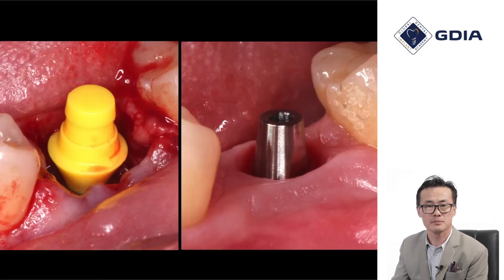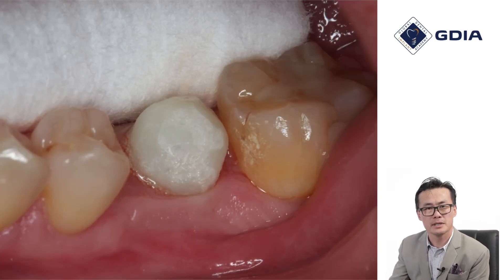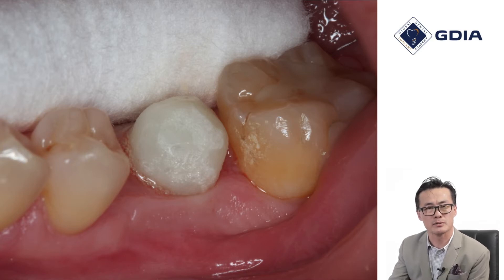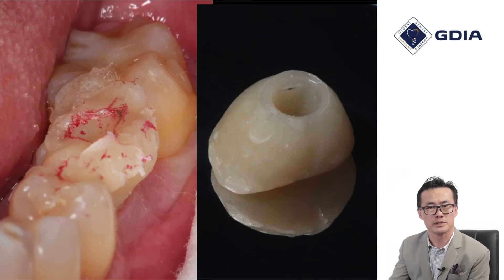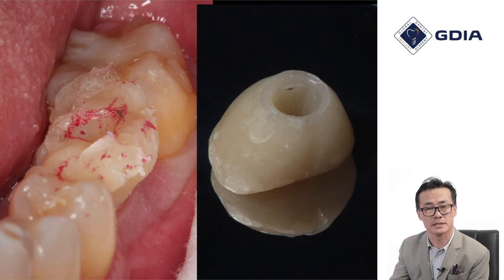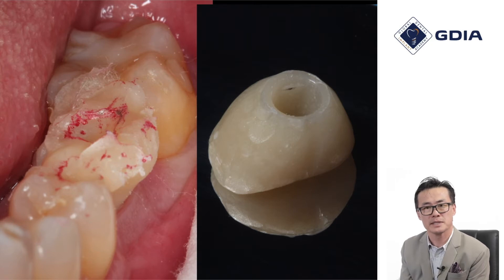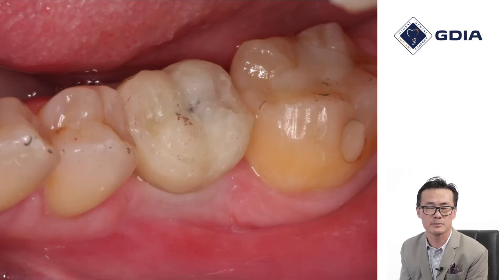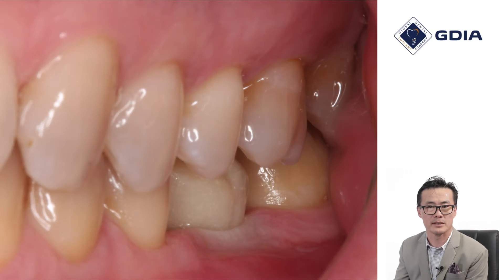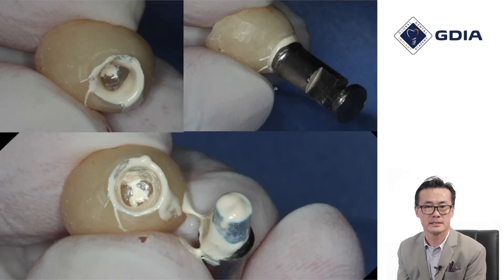Once that is placed, it's simply a matter of provisionalizing and going to the ultimate definitive restoration. Here we have a relatively simple protocol: a plastic template, or what we call a core, has been prefabricated before the appointment, fitted tightly in the mouth. A quick-setting resin material — namely Alike from GC America — is added and allowed to polymerize in the mouth. The contacts and occlusion are refined, polished, adjusted, and put back into the mouth with a simple cementation technique.